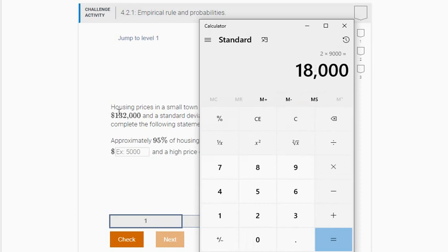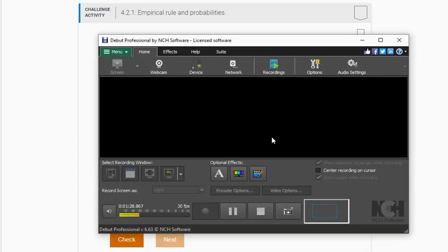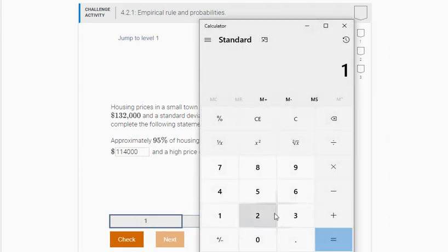So you're going to take, for the low value, you're going to take your mean of 132,000, and you're going to subtract away 18,000. And you're going to get 114,000. And then you're going to do the same thing on the other side, except you're going to add. So you're going to take your 132,000, and you're going to add that 18,000, the two times the standard deviation to get 150,000.